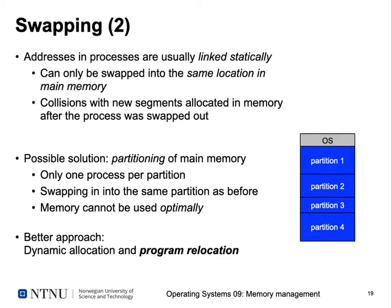If larger new segments were allocated after a process was swapped out, swapping it back in would create a collision — two different processes trying to occupy identical memory locations. A possible solution is partitioning main memory so only one process per partition, but this creates conflicts and prevents optimal memory use. So we want a better approach: dynamic allocation and relocating our program in memory.